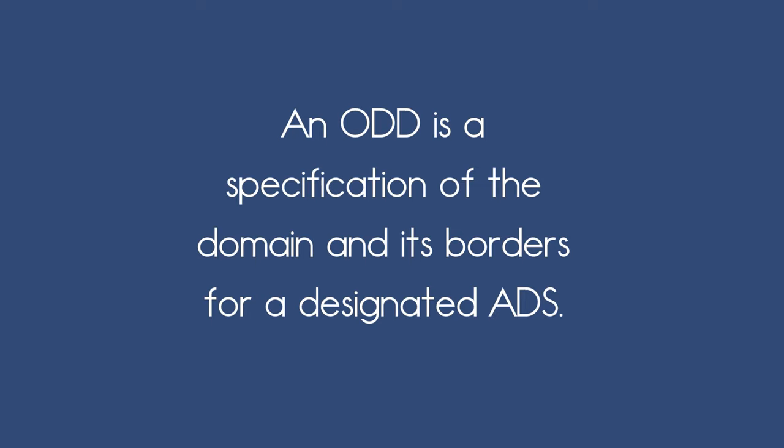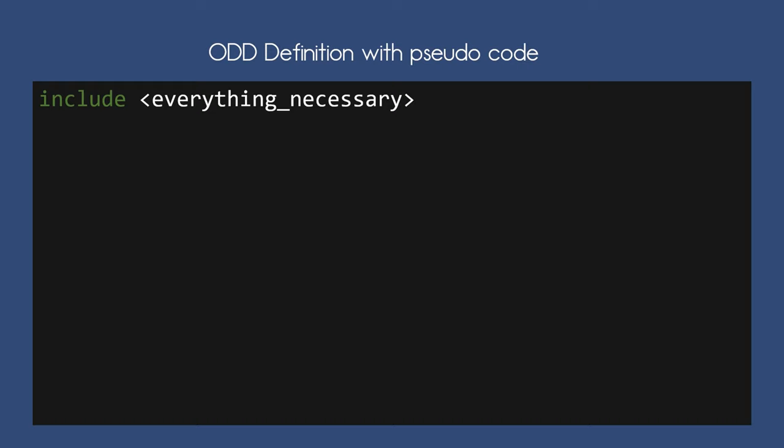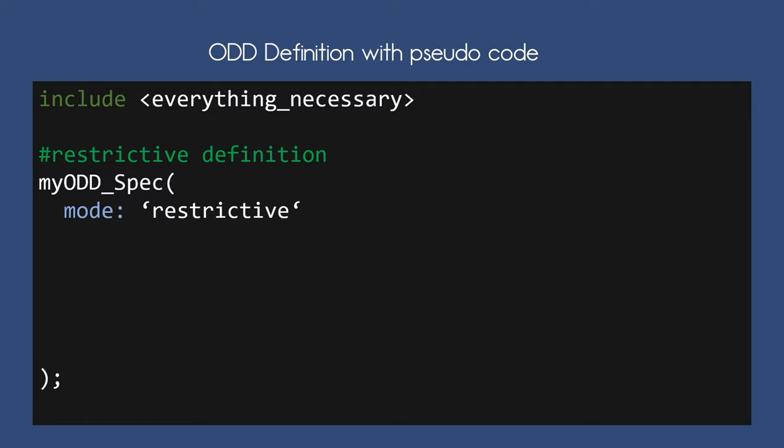What is an ODD? Let's recapture that question. An ODD is a specification of the domain and its borders for a designated ADS system. I've prepared a little example using some pseudocode. Let's include everything we need from somewhere and design our ODD in a restrictive fashion — that means we need to specifically allow everything we want to be in the ODD, meaning what the car, or the ADS, is designed to handle.